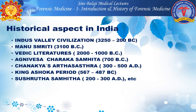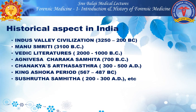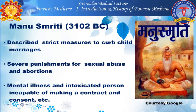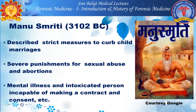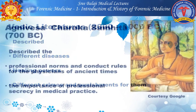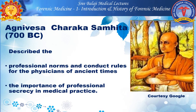The historical aspect of forensic medicine in India includes the Indus Valley Civilization, Manusmriti, Vedic Literatures, Charaka Samhita, Chanakya's Arthashastra, the King Ashoka period, and Sushruta Samhita. Manusmriti described strict measures to curb child marriages, severe punishments for sexual abuse and abortions, and discussed mental illness and intoxicated persons incapable of making a contract or giving consent. Vedic literatures described different diseases, healing paths, different crimes and punishments. Agni Vesa's Charaka Samhita described professional norms and conduct rules for physicians of ancient times — similar to the Hippocratic Oath — and the importance of professional secrecy in medical practice.